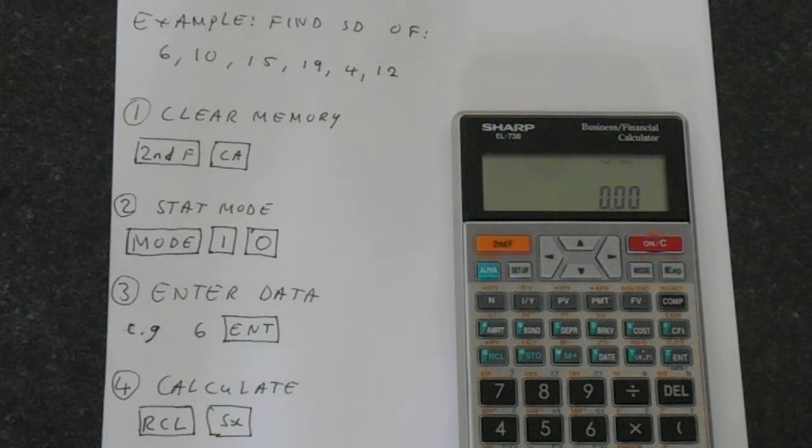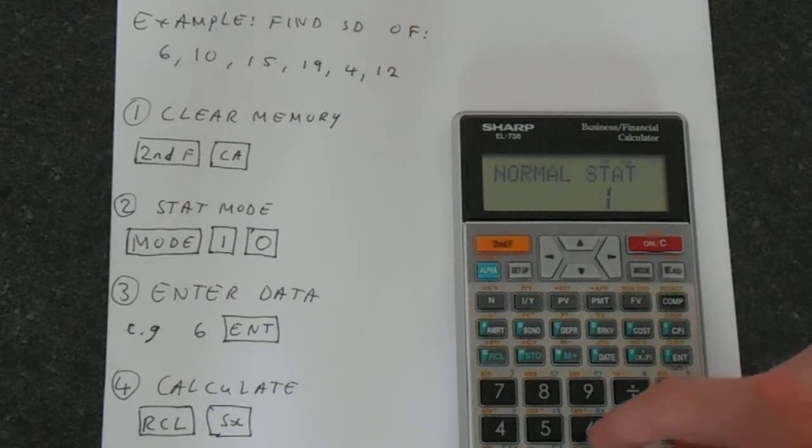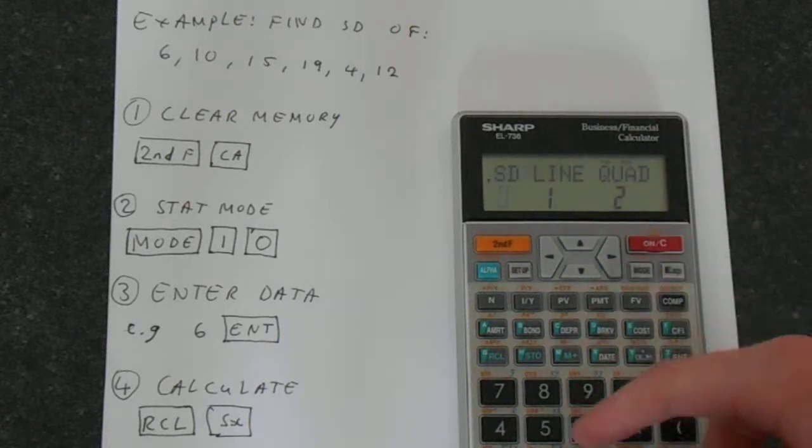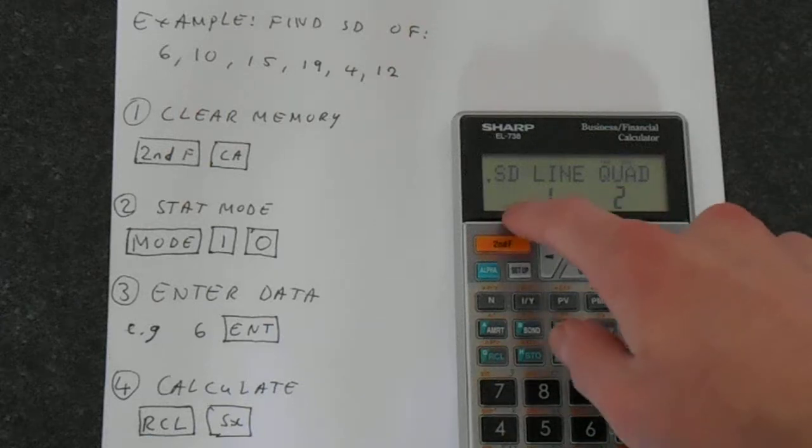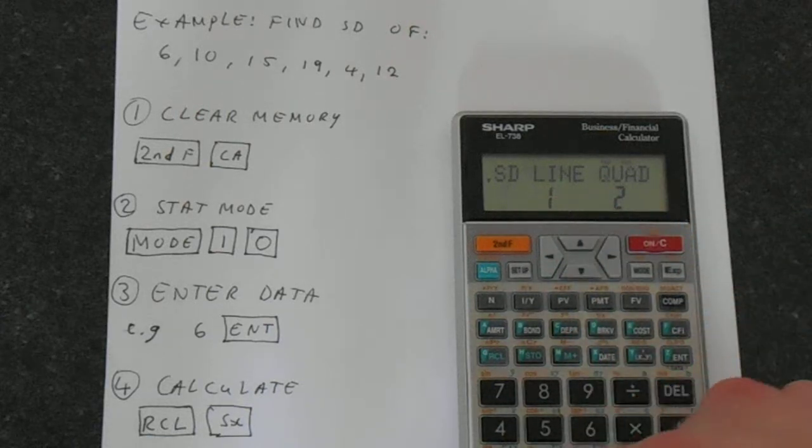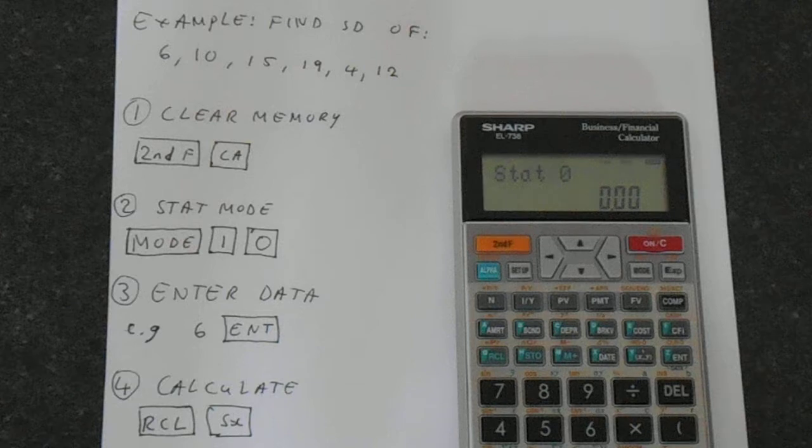We need to go into the stat mode. So mode 1. We're just using one set of data, so the SD is sufficient. So we're in stat 0 mode.